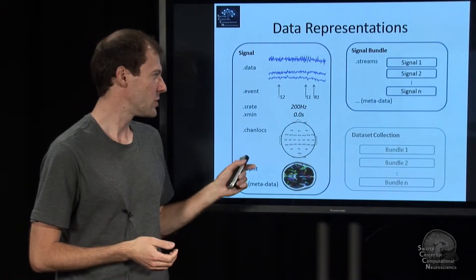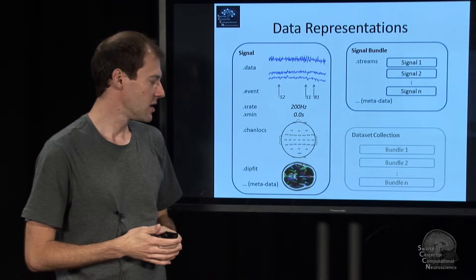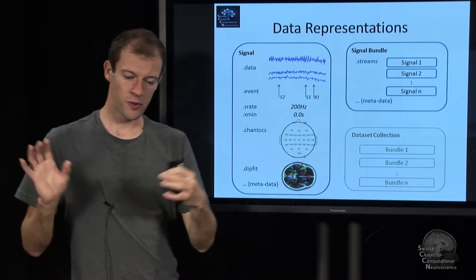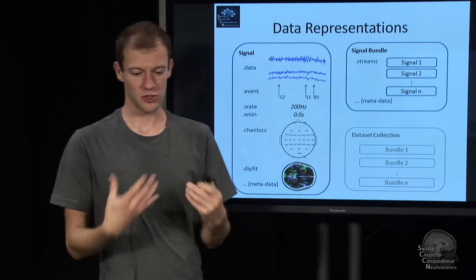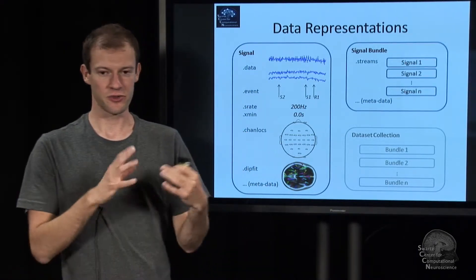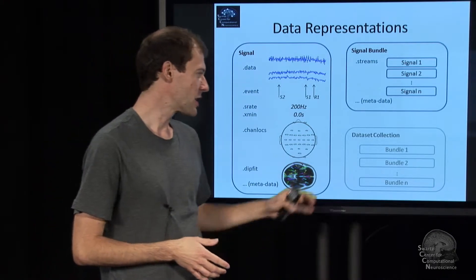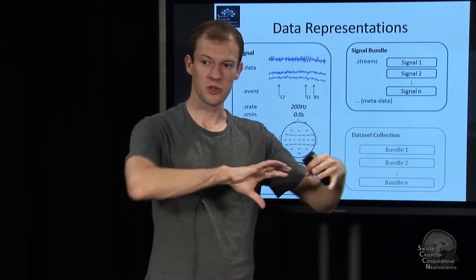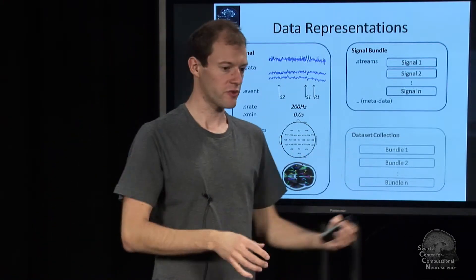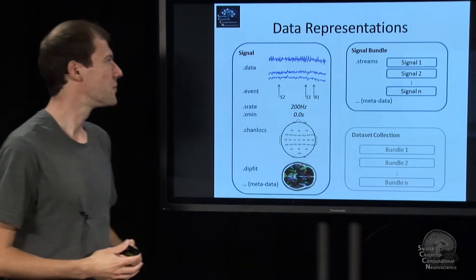The collection structure is the closest equivalent to an EEGLAB study. It can hold multiple recordings taken on different days, with different subjects, different tasks, and so on. You can pass this to a method that is able to deal with that data and learn from it.